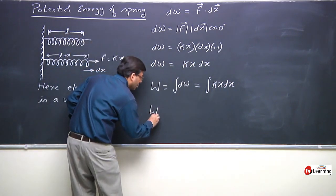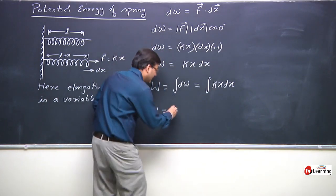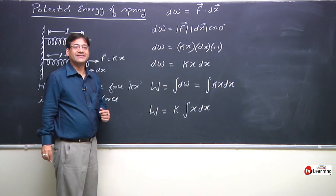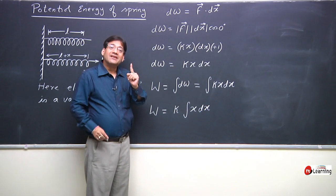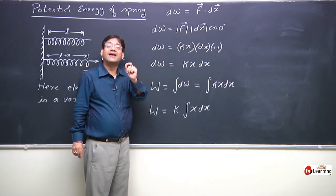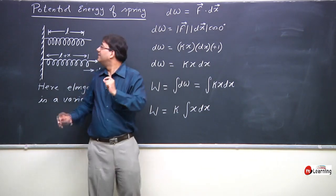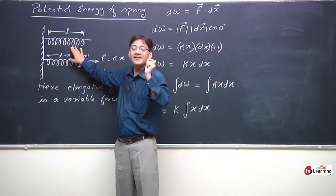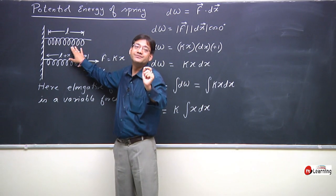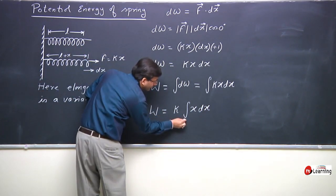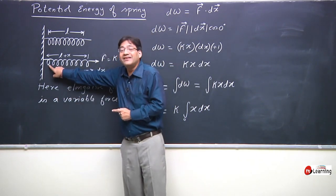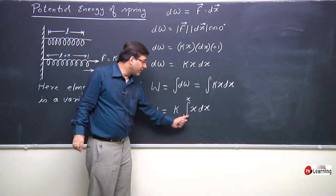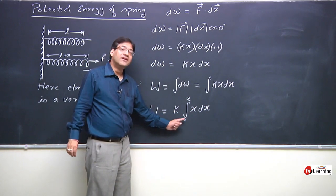Now we need to put the limits. Initially, when the spring is at its natural length, the elongation is zero, so x equals zero. Finally, when the spring is elongated by x, the value of x is x. So initial elongation is zero and final elongation is x. The integral formula is: integral of x^n dx = x^(n+1) / (n+1). Substituting n = 1 for x^1 dx.